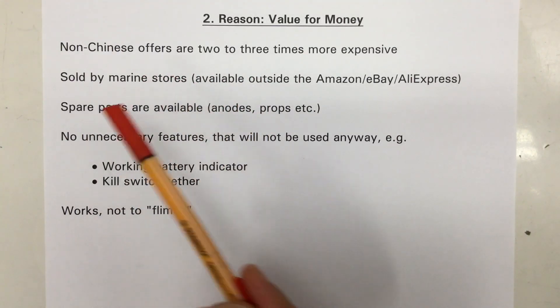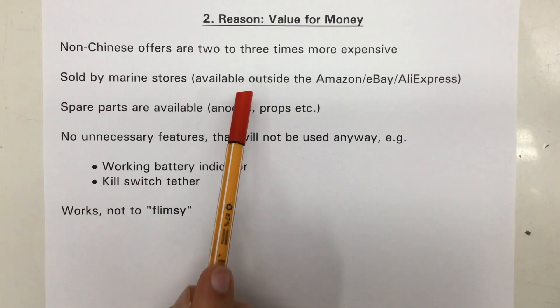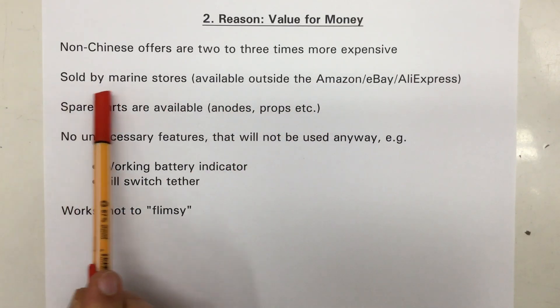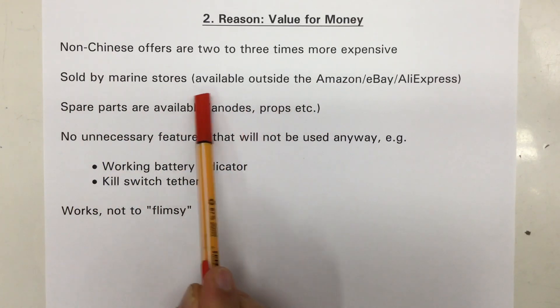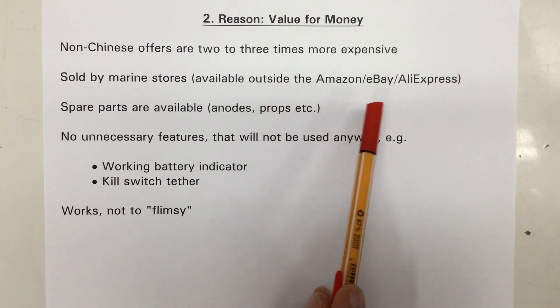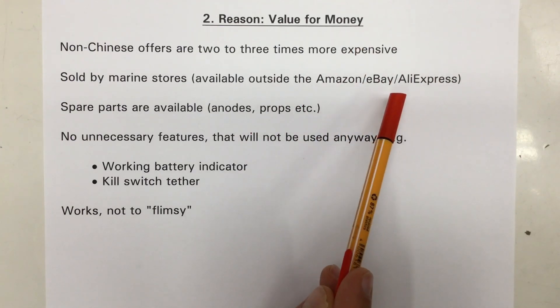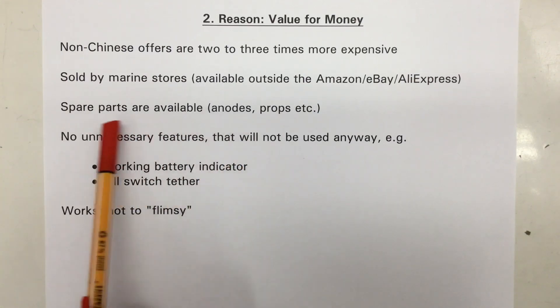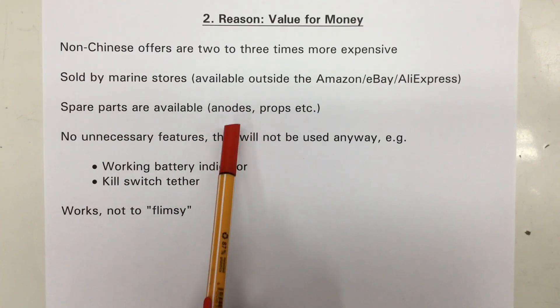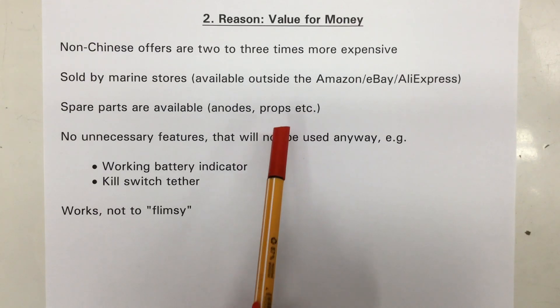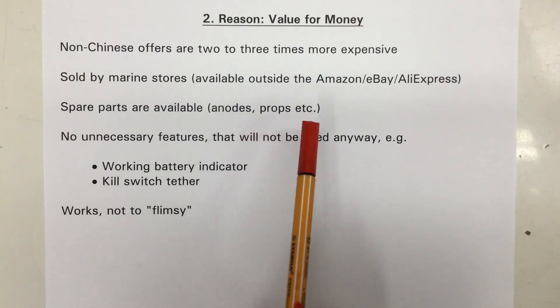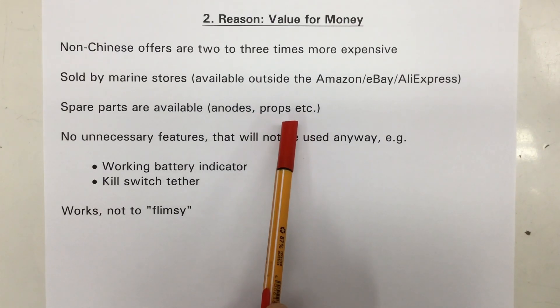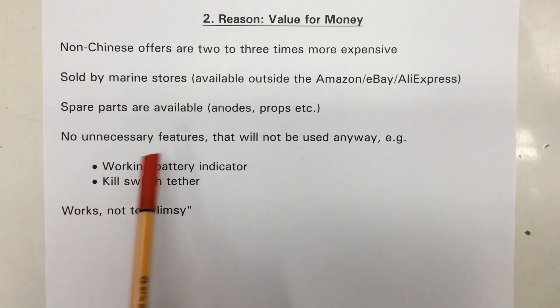The Haswings, while cheap, are still not too cheap. So, they are sold by marine stores, so they are available outside the Amazon, eBay, AliExpress sphere. And you get also spare parts for these things, like anodes, which you definitely need, and props, which I probably will need, knowing my boating skills.